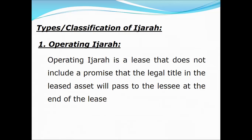Types of Ijara: Number one is the operating lease. An operating lease is a lease that does not include a promise that the legal title in the leased asset will pass to the lessee at the end of the lease. So it is a pure rental — the customer uses the asset for a period and at the end simply returns it, with no ownership transfer.